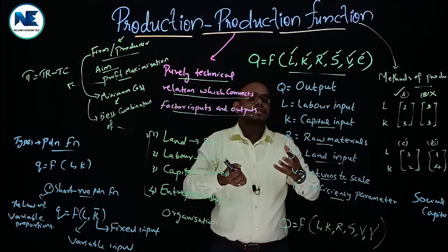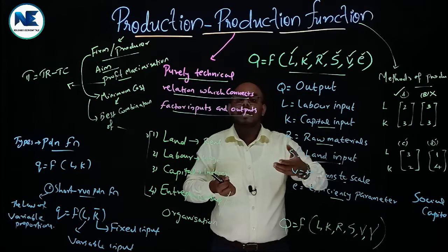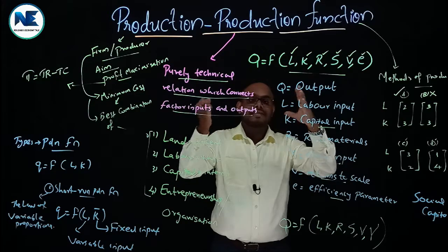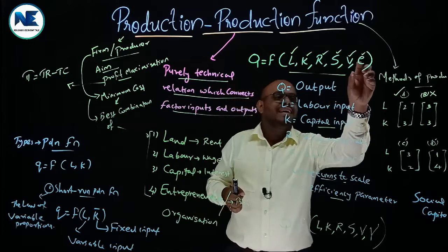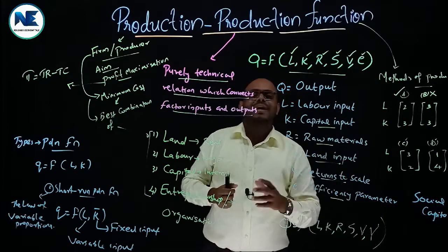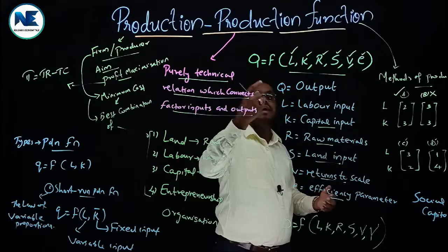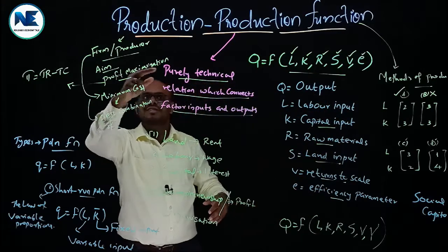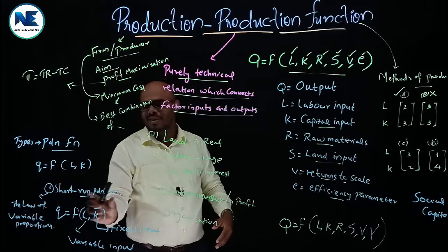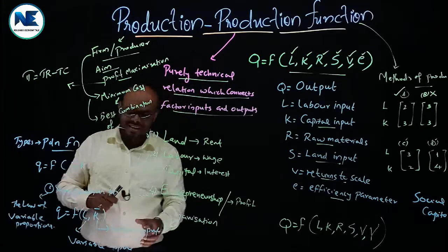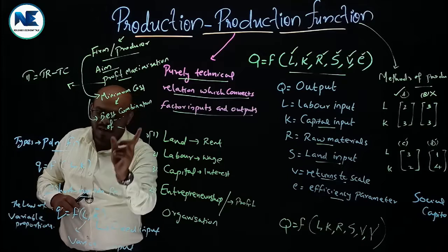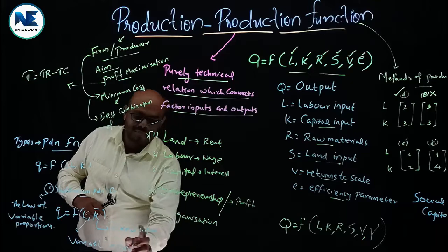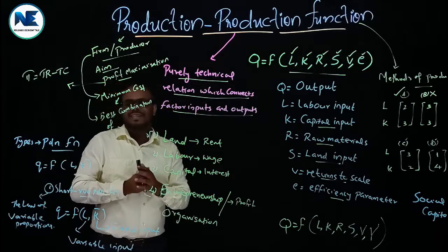The efficiency parameter E represents entrepreneurial efficiency or skill and organizational capability. It is very important in enhancing the output level. To summarize: we have discussed the production function as a purely technical relation connecting factor inputs and output, and the two types — the short-run production function related to the law of variable proportions, and the long-run production function related to returns to scale.